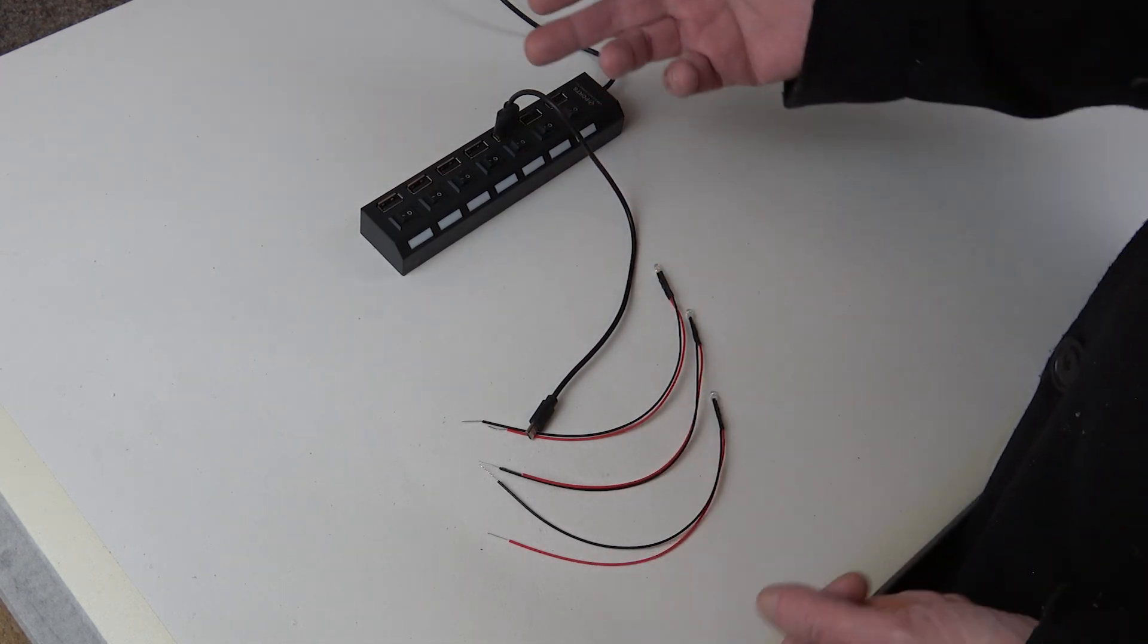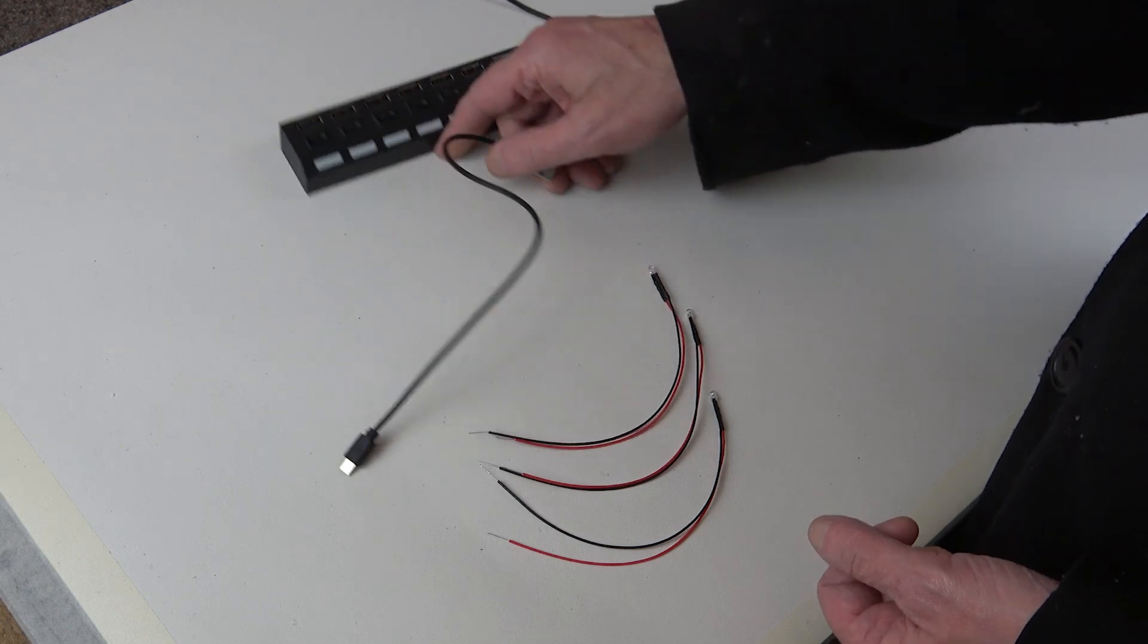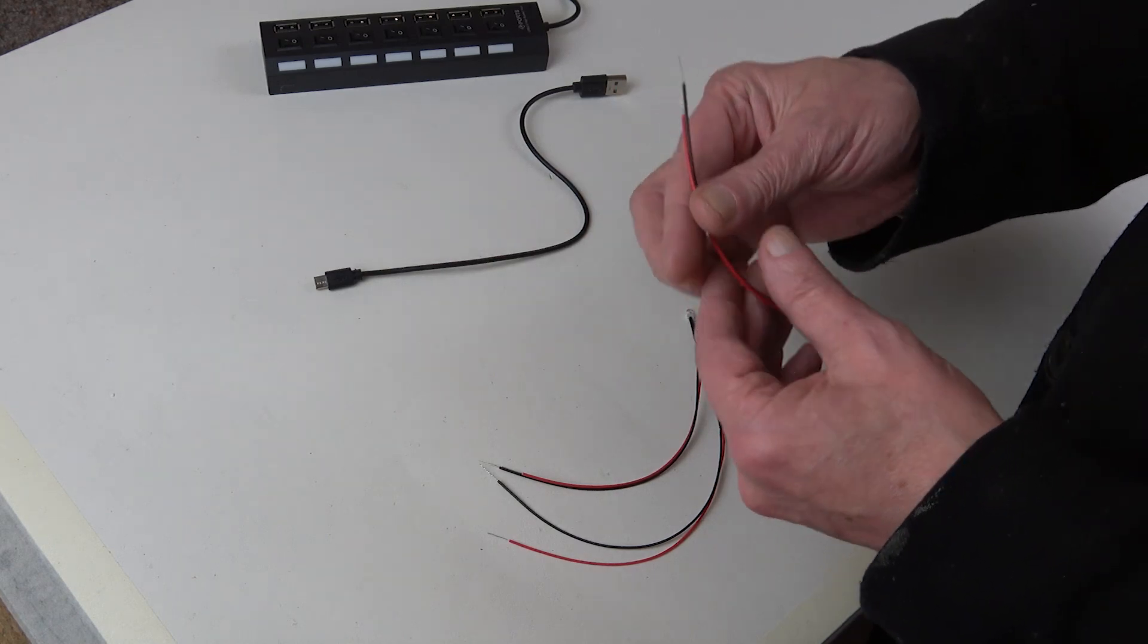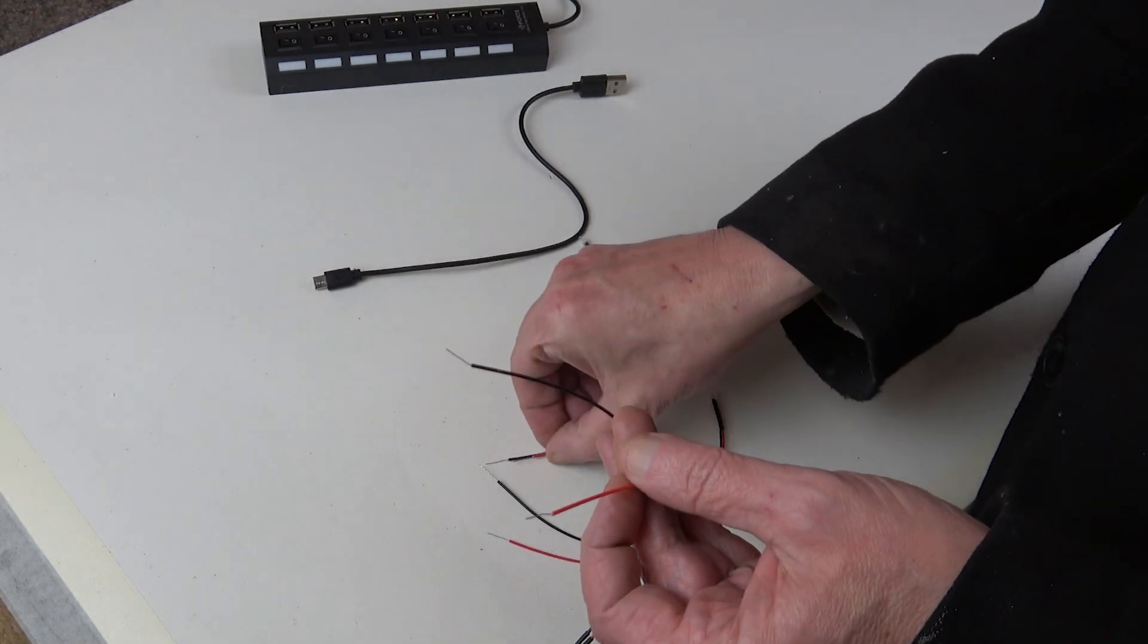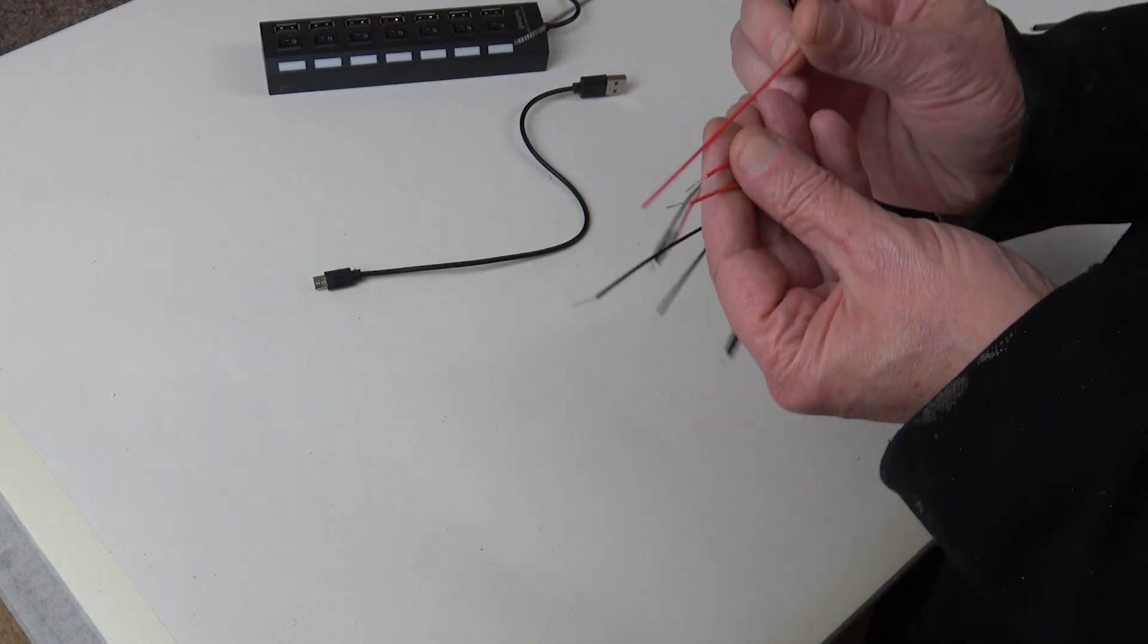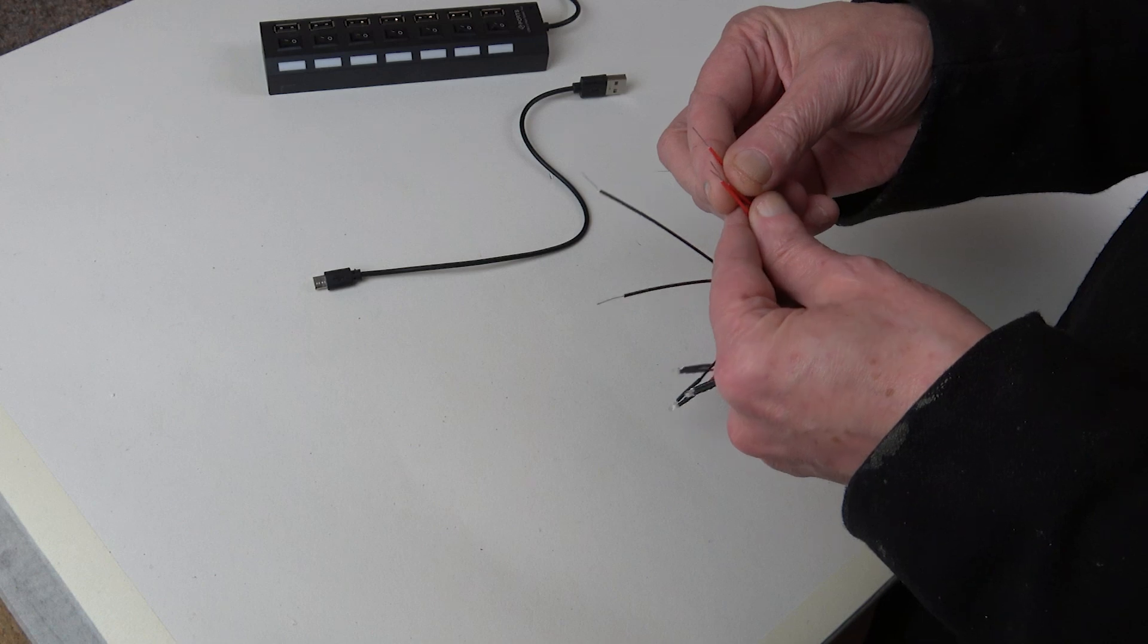It's very simple. In terms of the LEDs, you need to get all of the reds and all of the blacks and join them all together. So I'm just going to twist all these up so they are joined together.